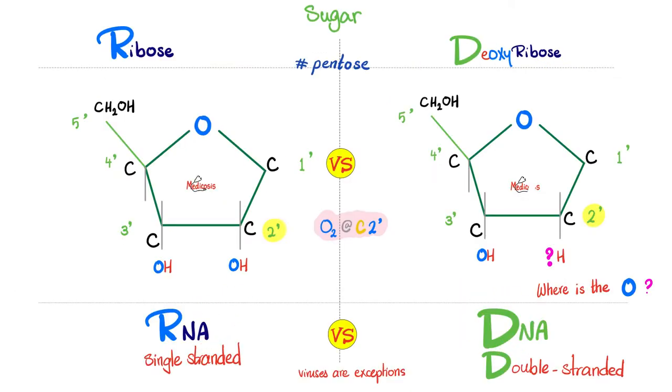DNA versus RNA. DNA has deoxyribose. RNA has ribose. DNA is double-stranded. RNA is single-stranded. Viruses are exception to this rule. Moreover, DNA has thymine, but RNA has uracil. DNA cannot leave the nucleus. RNA can leave the nucleus.